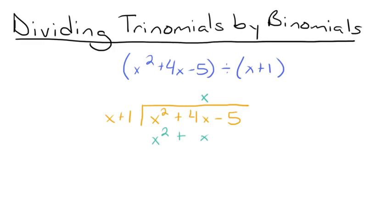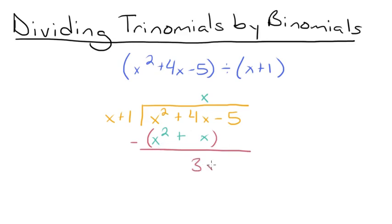Now we're going to subtract these two polynomials. So we're going to subtract x squared plus x from x squared plus 4x minus 5. The x squared terms cancel out, and 4x minus x is 3x. Then we're going to bring down the minus 5.